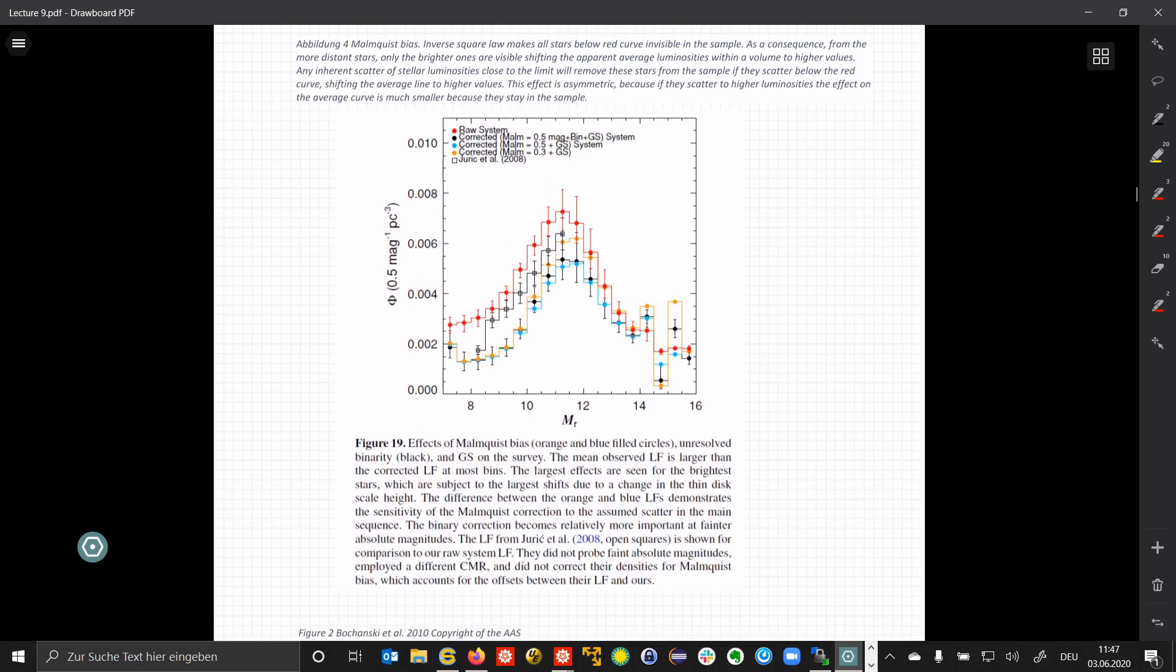And again, here in this figure, the quantitative effect is shown as a function of magnitude. The red dots show here the raw data, and different corrections are applied for this Malmquist bias, and we see here the effect depending on which correction we assume. This also emphasizes or highlights the effect or the strong influence of the assumptions on the final data that we can use.